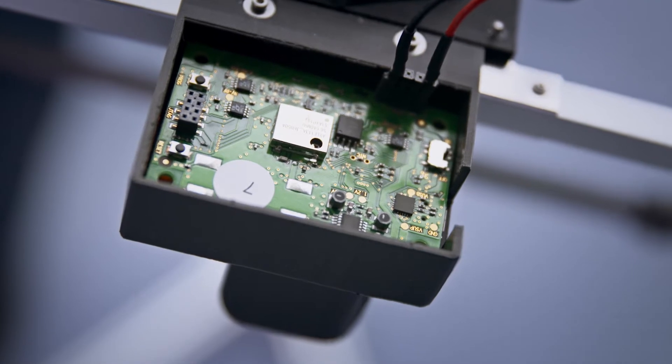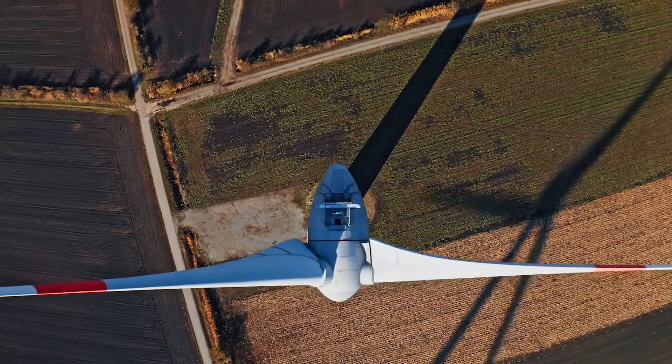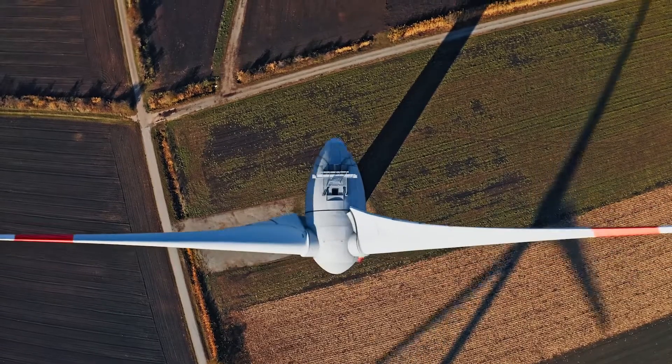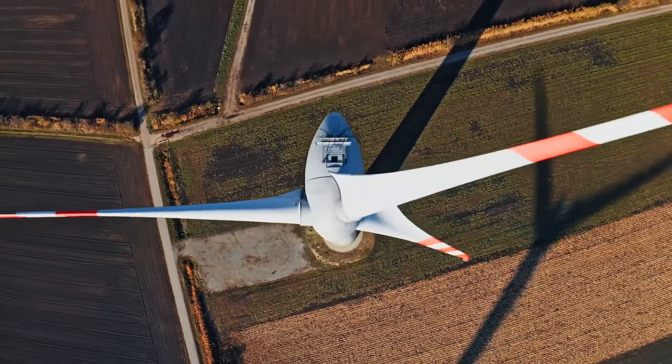Inspections can be undertaken of sites or locations that are difficult or dangerous for humans to access, such as on wind turbines, bridges or industrial buildings.